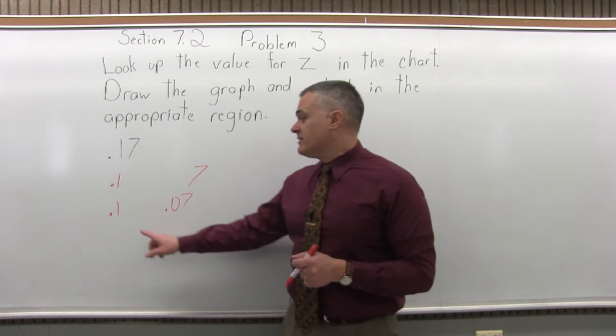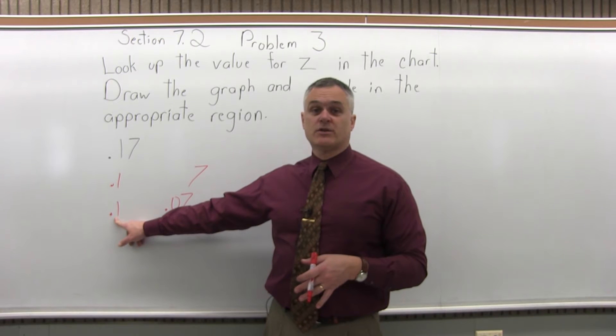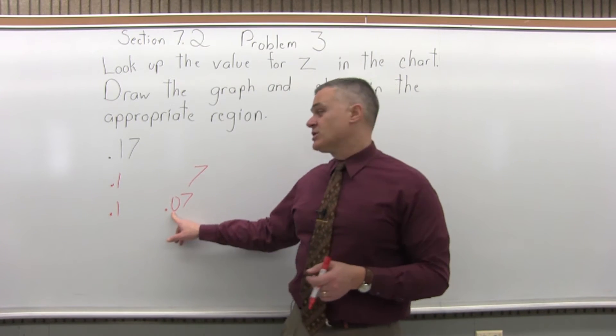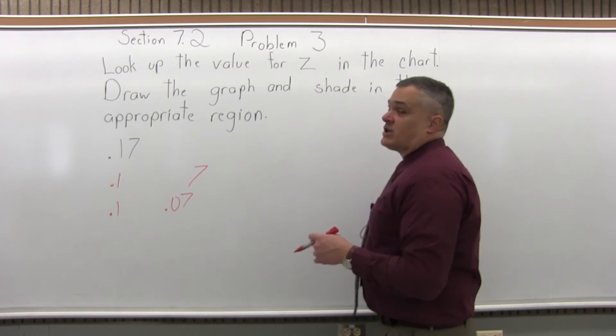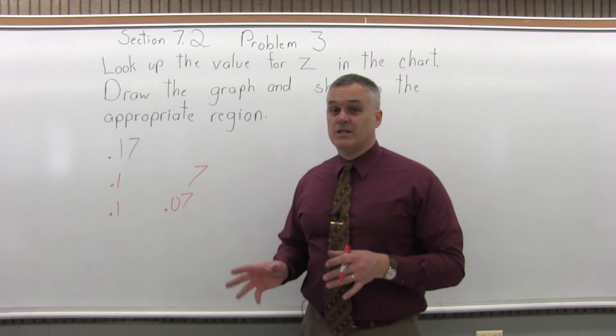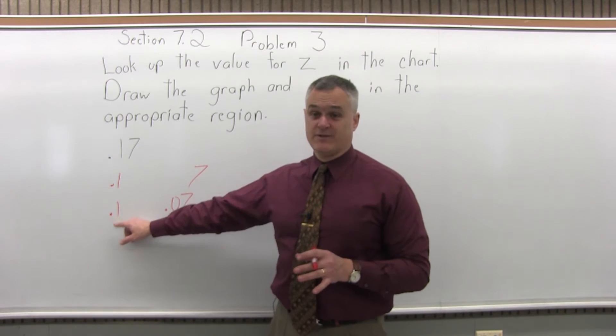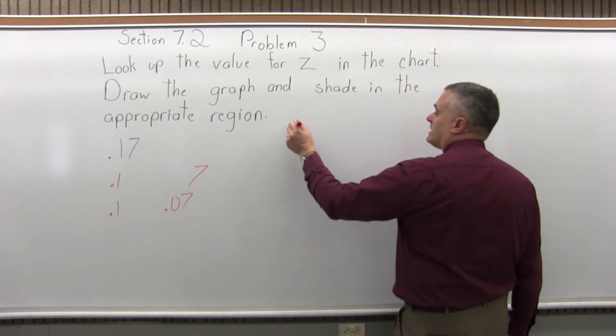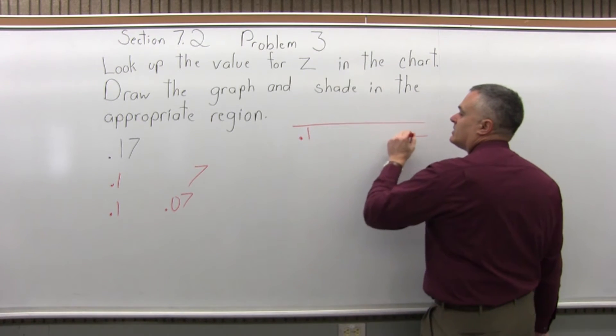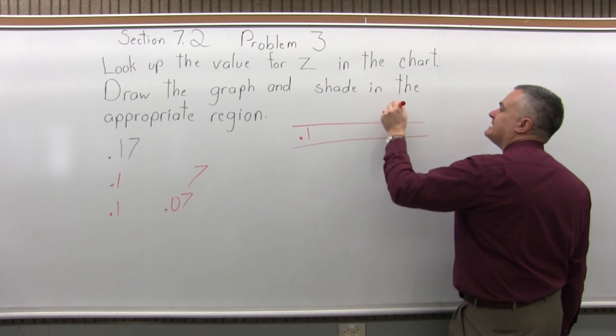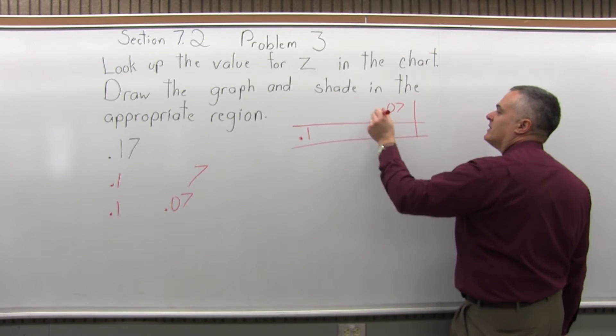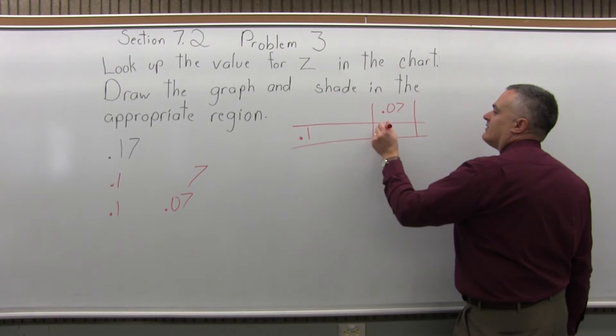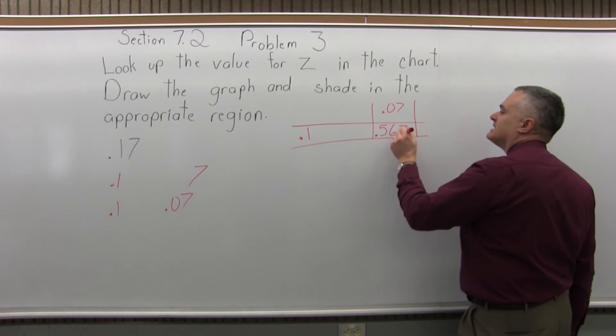Step four, go to the chart and the digit from the left here, the .1, will tell you what row of the chart to look in. And the digit from the right with the .0 in front of it will tell you what column of the chart to look in. Now, the chart is on two pages, there's a positive page and a negative page. Pay attention, this is a positive .17. So the .1 row is way up near the top, it's only the second row down. And you'll follow that out until you're under the .07 column. And you'll see where those intersect. And they intersect the value .5675.